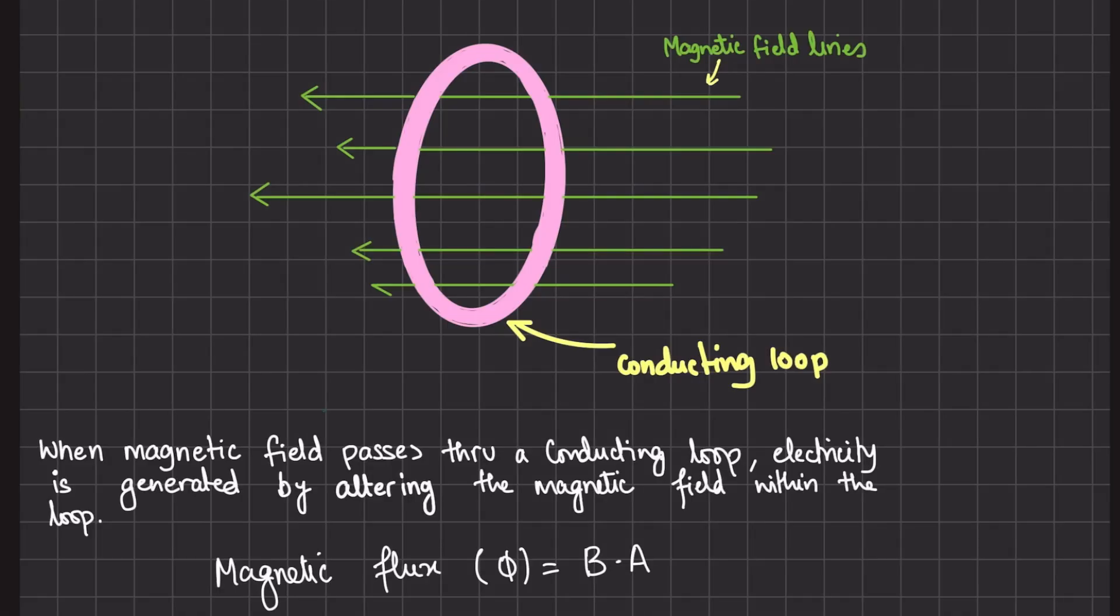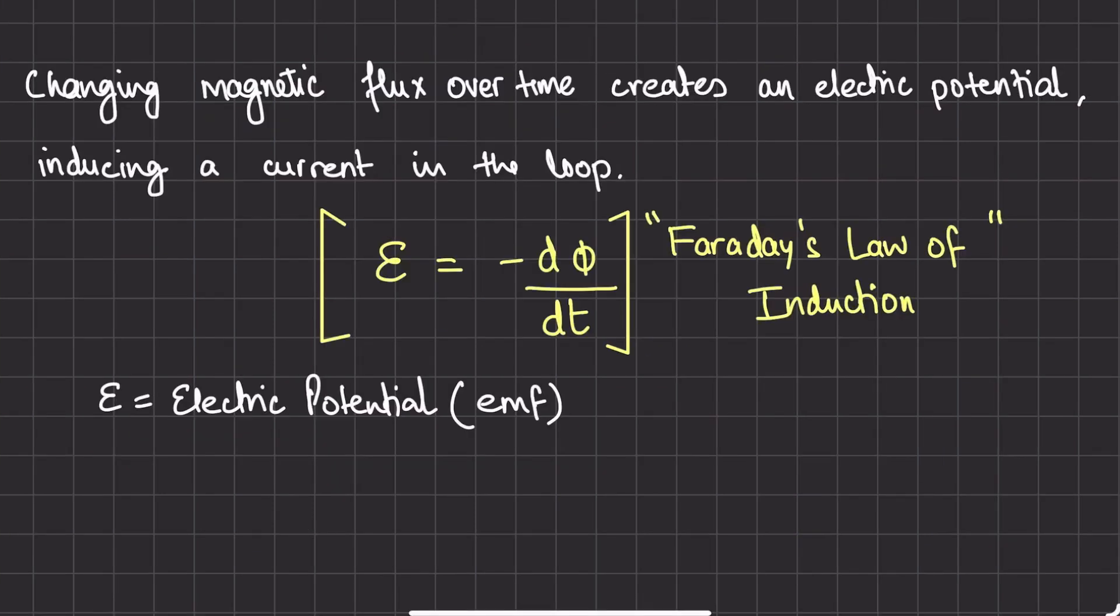Imagine a conducting loop. When a magnetic field moves through that loop, we can actually generate electricity. The key is that the amount of magnetic field passing through that loop needs to change. So when magnetic flux in a loop changes over time, it actually creates an electric potential. This potential then causes current to flow through the loop.